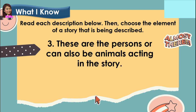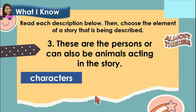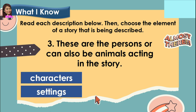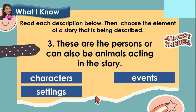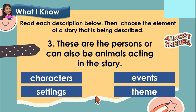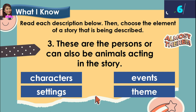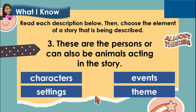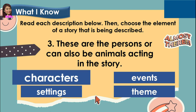Number 3: these are the persons or can also be animals acting in the story. Is it characters, settings, events, or theme? The answer is characters.